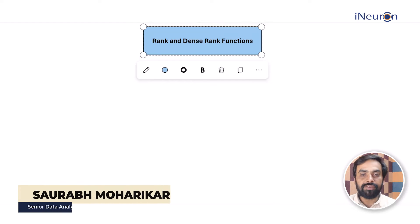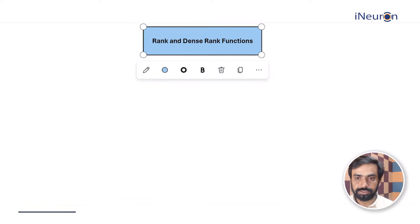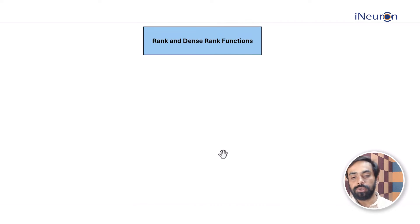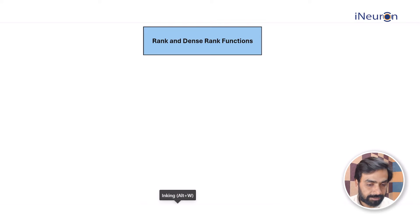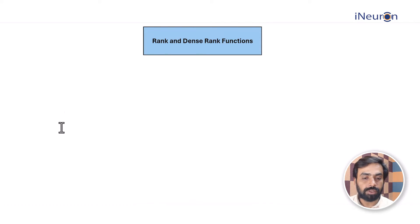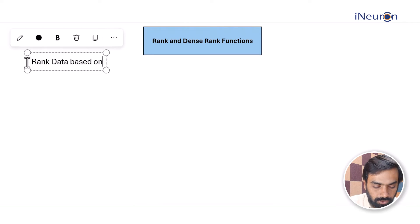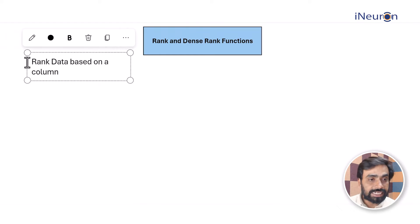Today we'll move on to the RANK and DENSE_RANK functions. These functions are basically used to rank the entire data based on a certain column.